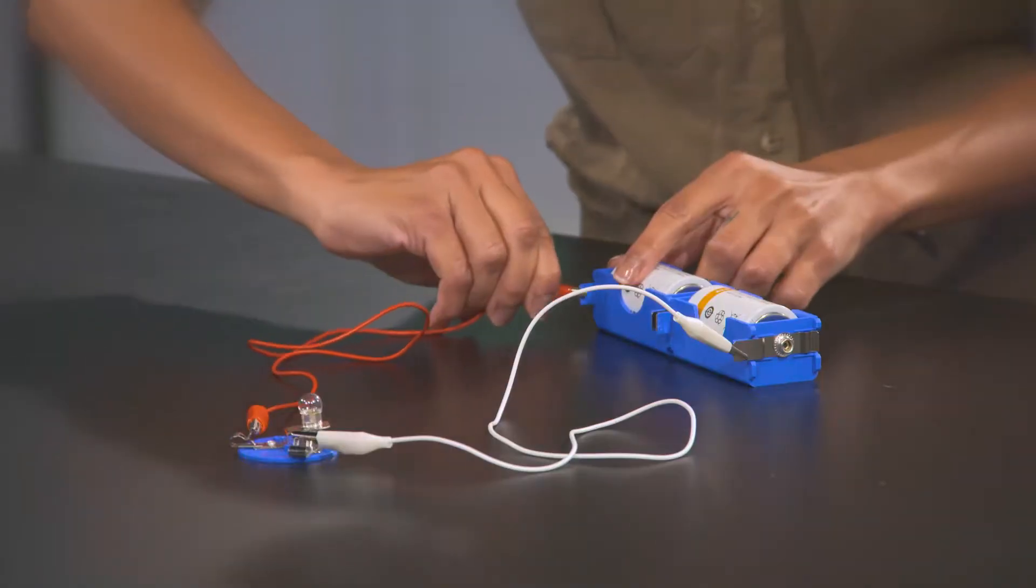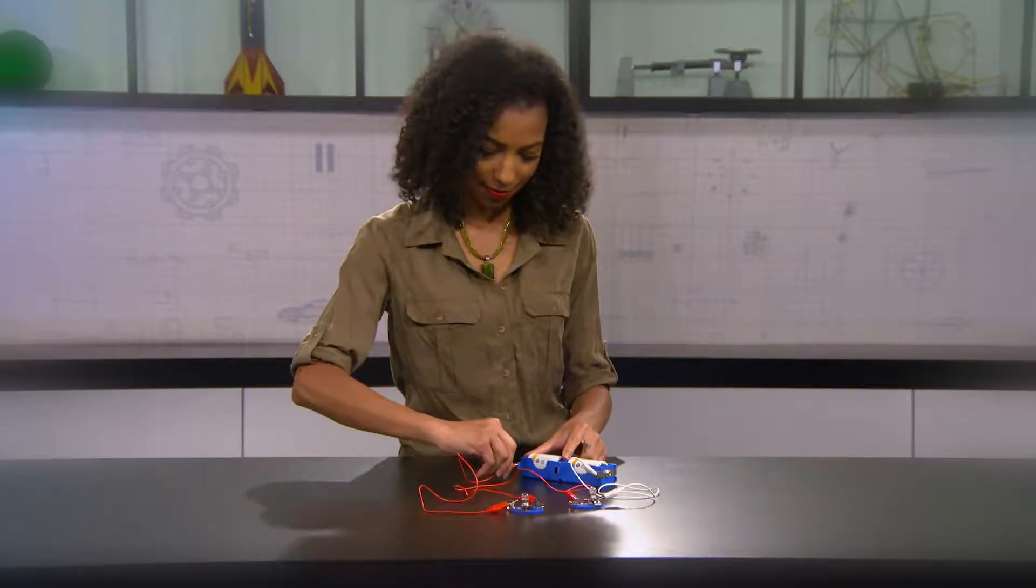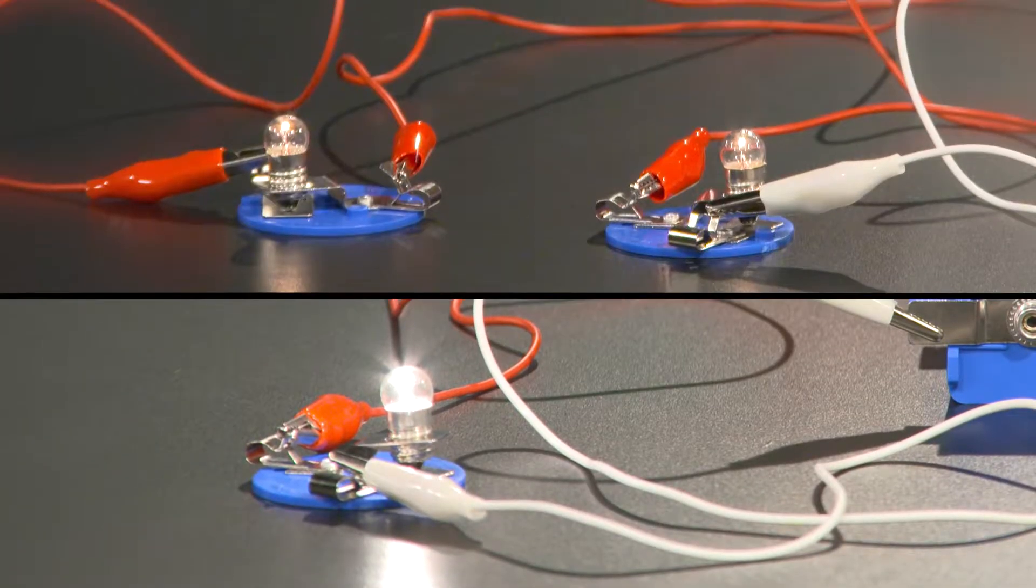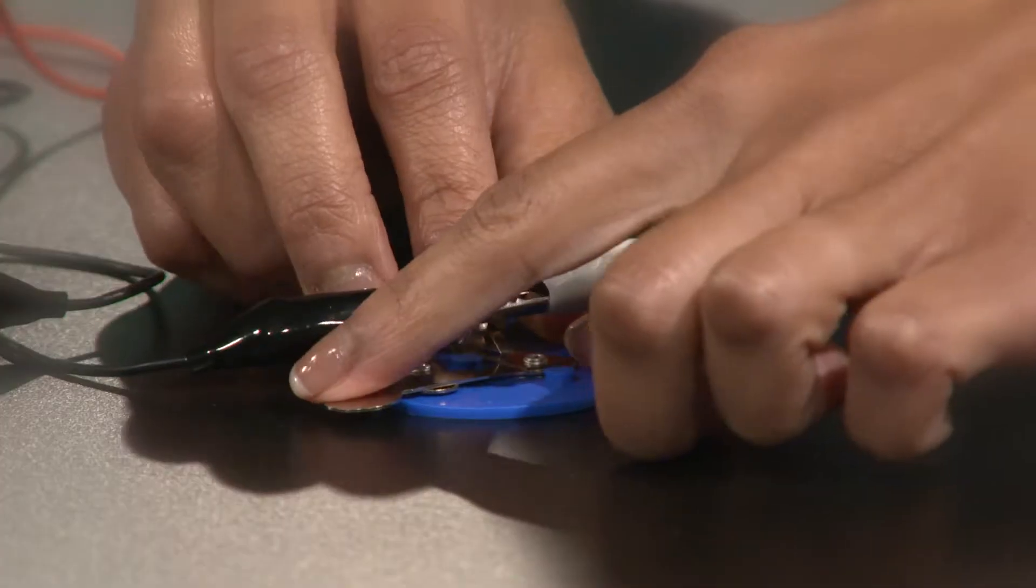In another segment, we saw what a simple circuit called a series circuit looks like. We saw that the more bulbs you add, the dimmer the bulbs because the voltage is being shared across them. And if one went out, they all did.